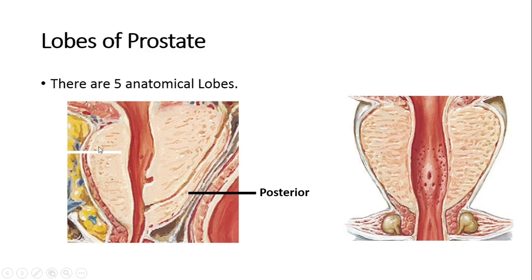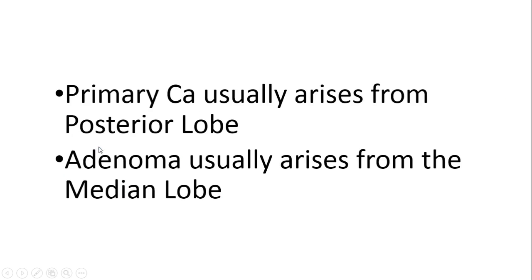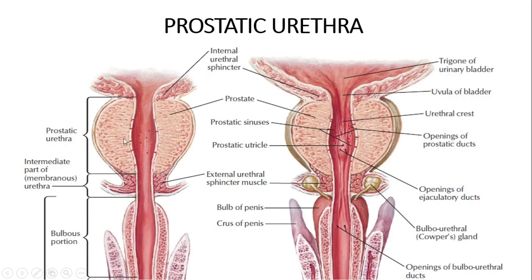The posterior lobe is more prone to primary carcinoma, and the median or middle lobe is more prone to adenoma. Now let us orient ourselves to the prostatic urethra. The roof of the prostatic urethra has little notable anatomy, but in the floor you can see the trigone of the urinary bladder continuing as the uvula of the bladder, then continuing as the urethral crest. Here is a bulbous swelling known as the seminal colliculus or verumontanum. At the midpoint of the seminal colliculus is the prostatic utricle, and on either side is the opening of the ejaculatory duct.